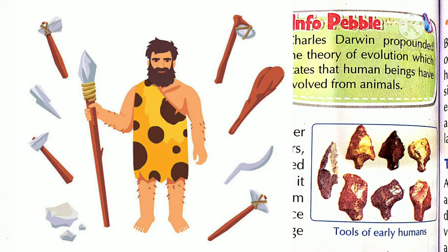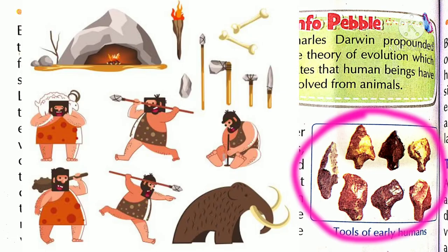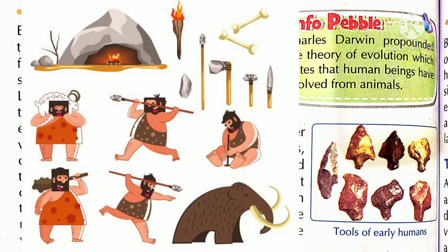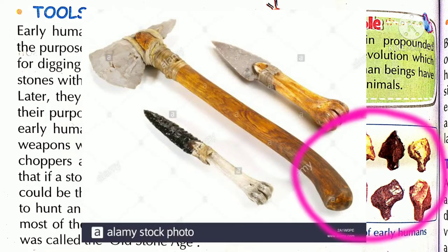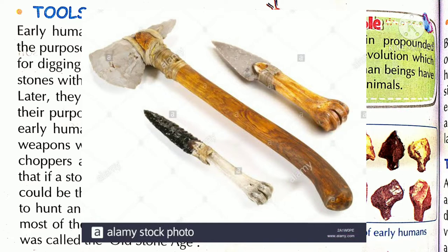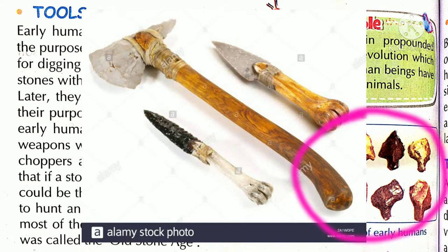Jungle and animals are very dangerous. It is not easy to hunt — you want to stay far away. Because jungle and the animals are very dangerous, early humans had to find ways to hunt from a distance.